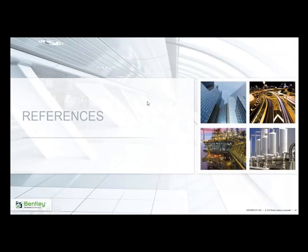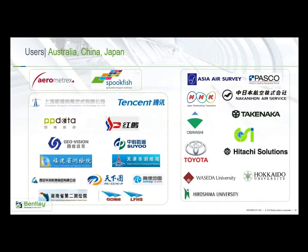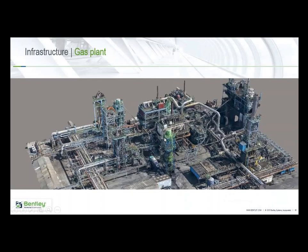Users of this technology come from all kinds of fields — entertainment, real estate, infrastructure, and aviation. Well-known companies like Toyota and Hitachi have used this technology effectively. Here's a typical example of a gas plant created using ContextCapture technology — you can see the pipes and vessels. Imagine if there was a fire or a tragedy in one of these plants; it's very difficult to figure out what happened without as-built models, which help responders react better to any disaster.